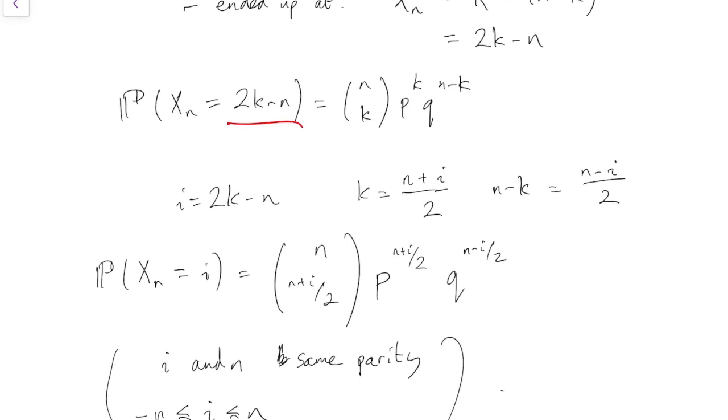And so that is the exact distribution of the simple random walk using the binomial distribution. Okay, that's the end of this section, and in the next section we'll be looking at a gambling problem based on the simple random walk.